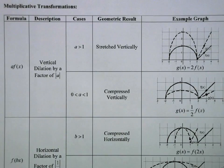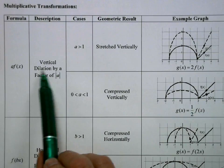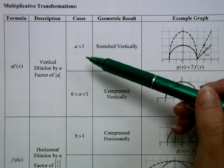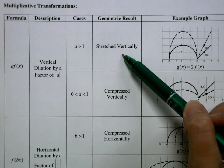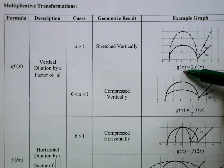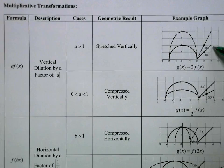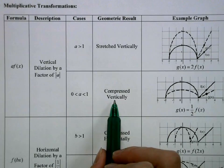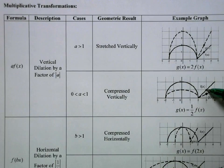Next, we have multiplicative transformations. The first case is multiplying the function as a whole by some constant — that gives a vertical dilation by a factor of the absolute value of a. If that value is bigger than 1, it's going to stretch the graph vertically, multiplying all y values by that number. So g of x equals 2 times f of x stretches all y values by a factor of 2. If the value is between 0 and 1, the graph is compressed vertically, squishing it towards the x-axis.